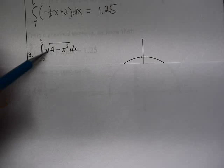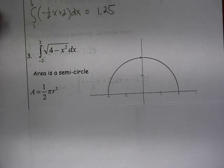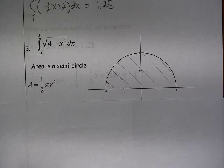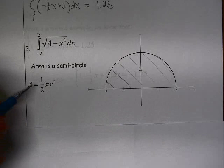All right, the next one we have here is the definite integral from negative 2 to 2 of the square root of 4 minus x squared. So that area is a semicircle. All right, so we're finding this area. Notice that this entire area is above the x-axis and below the semicircle. So we want to find the area of that semicircle.